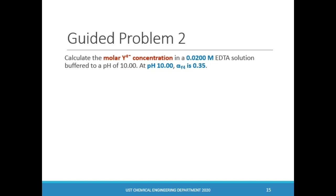To check your understanding, let us consider this problem. Calculate the molar Y4- concentration in a 0.02 molar EDTA solution buffered to a pH of 10. At pH 10, alpha is 0.35. Since there is no reaction that happened, we can assume that the total uncomplexed EDTA concentration Ct is just equal to its initial concentration of 0.02 molar. To get the molar concentration of Y4-, we use the equation of alpha. Substituting known values, we get 7 × 10⁻³ molar.